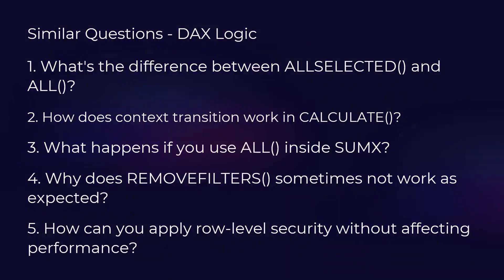Similar difference questions include: ALLSELECTED vs ALL — ALLSELECTED applies filters only when the user selects a filter, while ALL completely ignores all filters. How does context transition work in CALCULATE? — It converts row context into filter context. What happens if you use ALL inside SUMX? — ALL removes filters affecting row-by-row calculations. Why does REMOVEFILTERS sometimes not work as expected? — It depends on filter propagation and table relationships.